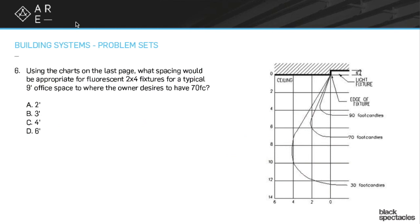Using the charts on the last page, what spacing would be appropriate for fluorescent 2x4 fixtures for a typical nine foot office space where the owner desires to have 70 foot candles?